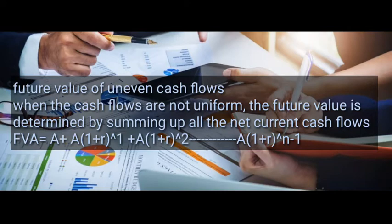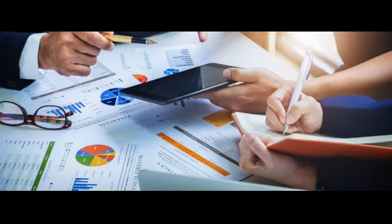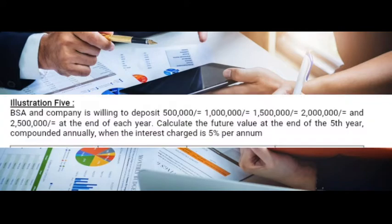The future value is determined by summing up the net cash flows. For year one it's just A, for year two it's A times (1 + r)^1, for year three the power is two, and for year four the power is three — the pattern continues like that. Let's look at an example.